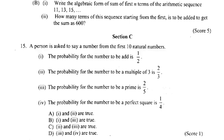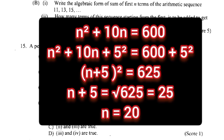2. How many terms of this sequence starting from the first is to be added to get the sum as 600? Answer: n square plus 10n equal 600. n square plus 10n plus 5 square equal 600 plus 5 square. n plus 5 the whole square equal 625. n plus 5 equal root of 625 equal 25. n equal 20.